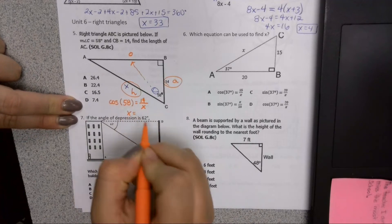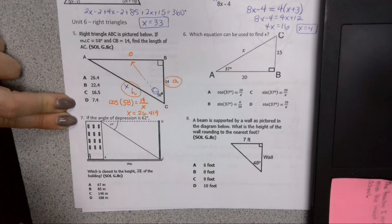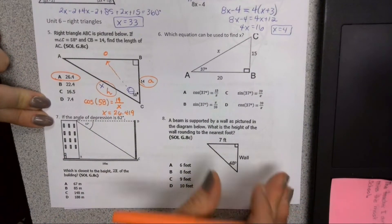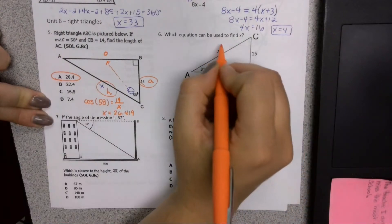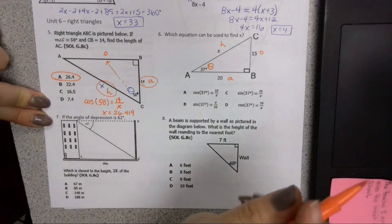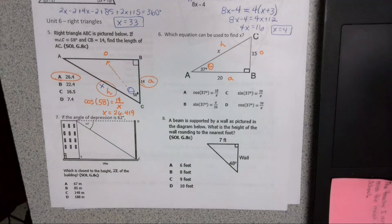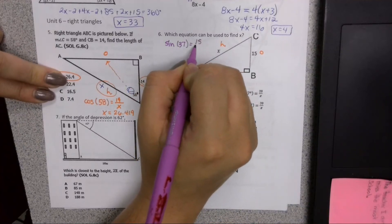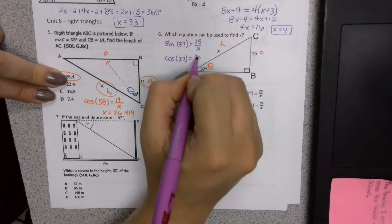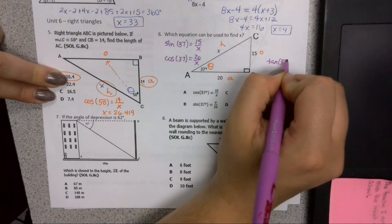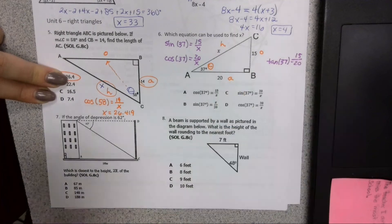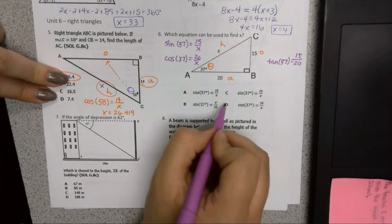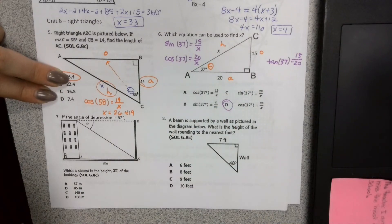If we're going to round, this next question is asking us something very similar. Which of the following could be used to find x? So here's where my theta is, and if I label each of my sides here, we can set up each of the trig functions. We could set up sine 37 equals 15 over x. We could set up cosine 37 equals 20 over x. And we could set up tangent 37 equals 15 over 20. So which one of those is my answer choice? D is one of those trig relationships.